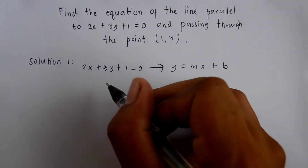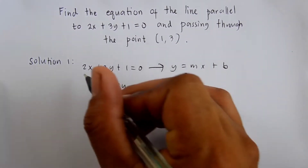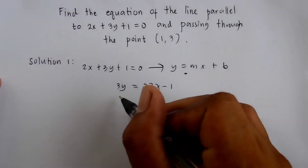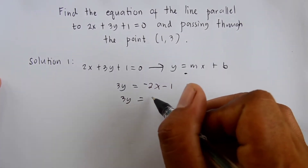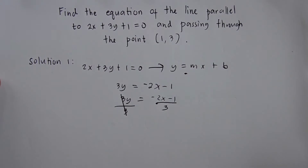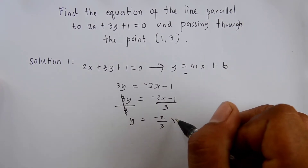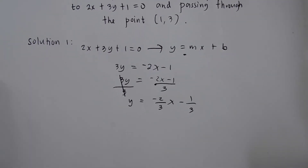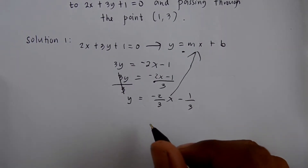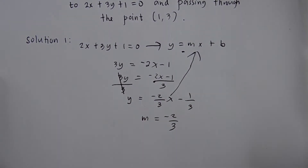To do that, this will become 3y equals negative 2x minus 1. Then dividing both sides by 3, it becomes y equals negative 2 thirds x minus 1 third. So we are now in the form y equals mx plus b, where m is equal to negative 2 thirds. So negative 2 thirds is the slope of 2x plus 3y plus 1 equals 0.